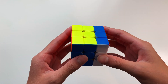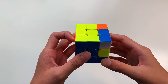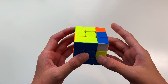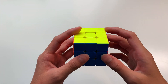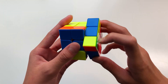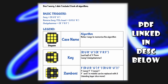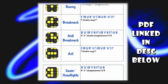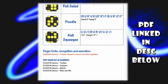Sexy move, which is R, U, R', U'. Reverse sexy move, aka F2L insert: U, R, U', R'. And sledgehammer: R', F, R, F'. All algorithms and ways to memorize them will be in the PDF linked in the description below. Feel free to check it out, download, or even print it out.